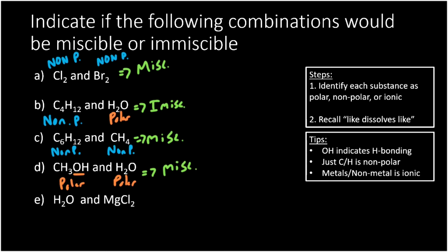H₂O and MgCl₂: water is still polar. MgCl₂ is ionic — it starts with magnesium, a metal, combined with chlorine, a nonmetal. If you're ever unsure whether something is ionic, go to the periodic table and check if it's made of a metal and a nonmetal. Polar and ionic — are those similar? Yes, they're both charged. So that means those are miscible.